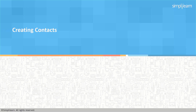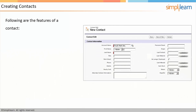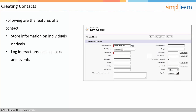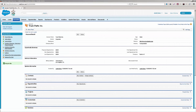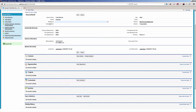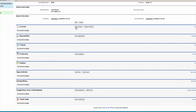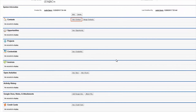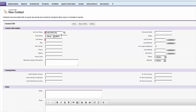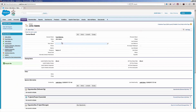The next thing we're going to talk about is creating contacts on those specific accounts. The features of a contact are quite simple. This is really what CRM systems were designed around from the beginning — they store information on individuals, you can log interactions such as tasks and events. You can also sync them with Outlook or Gmail. You can also do that on leads, but it's primarily done on contacts because the contacts you have are the actual individuals you really want to be talking to. So we're going to jump into Salesforce and create a new contact. We're at my Truck Parts Inc. account, and I'm going to click on the new contact button. I can type in who I want that new contact's name to be and click save. It simply creates a new contact record.